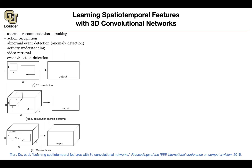Another idea is to have a 3D convolution. You have K by K — your filter size in space — and then another filter size in time, D. Not only are you sliding it in 2D over your images, you are sliding it over the third dimension as well. So the filter is being slid over all three dimensions.